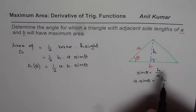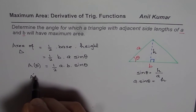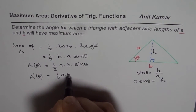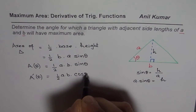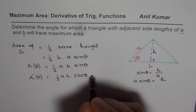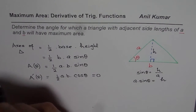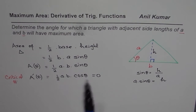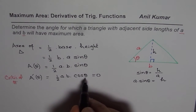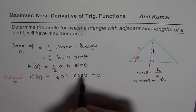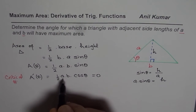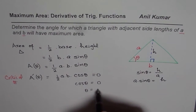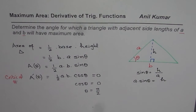Since we need to maximize the area, let me find the derivative of this function with respect to theta. The derivative will be (1/2) · A · B · cos θ. To find the critical number, we equate this derivative to 0. Cos theta equals 0 when theta equals pi by 2. So the critical number for us is pi by 2.